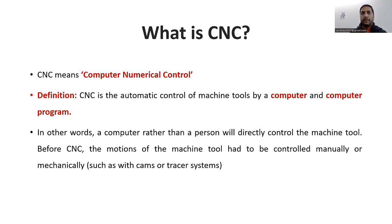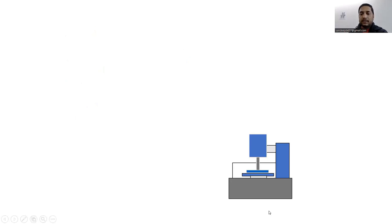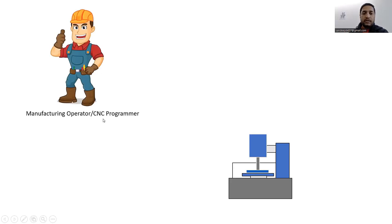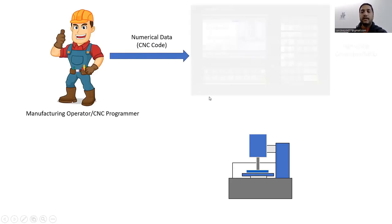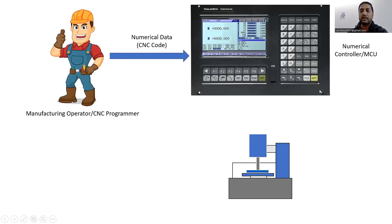The axial movements of CNC machine tools are guided by a computer which reads the program and instructs motors to move in the appropriate manner. The motors cause the table to move and produce the machined part. The computer does not know what shape to cut until you write a program. The CNC programmer writes programs as numerical data — NC code or CNC code — and inserts that code into the MCU, which stands for Machine Control Unit.